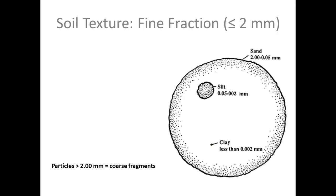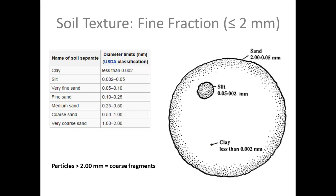So again, particles greater than 2 mm are coarse fragments. And notice that the sand could actually also be classified into subcategories, given that there's a really broad range. So very fine sand to very coarse sand. Think about beaches that you've been on, really fine, soft sand. And other times it's a lot coarser, rougher sand texture.